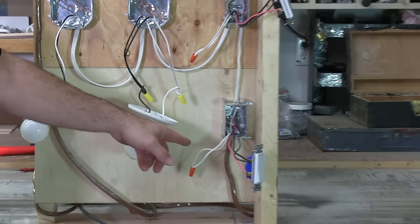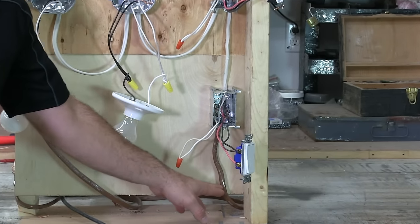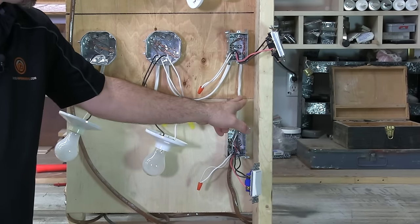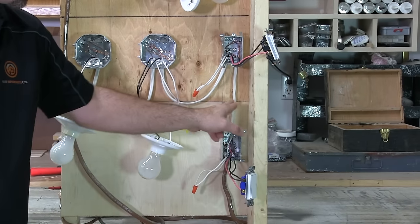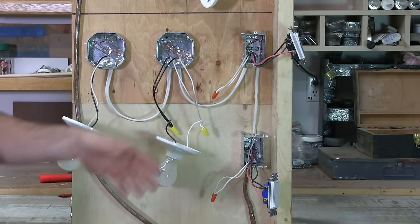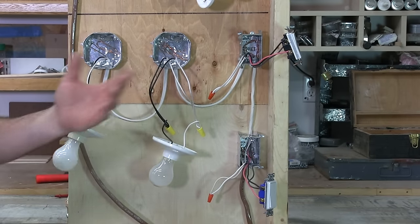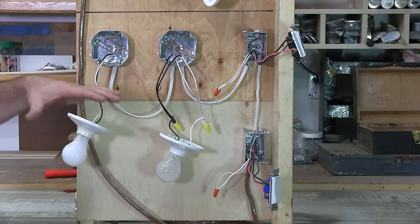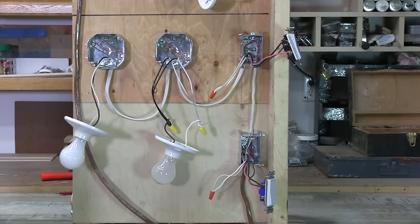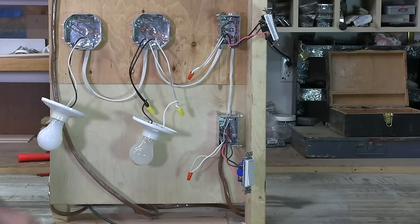In this first one, we've got power coming in through a 14-2. I'm just going to put a disclaimer out right now. In this scenario, I'm not saying that how I've got the actual wire ran from box to box is correct. I don't have staples, anything like that. This video is more about how to hook up the switches to the lights so that everything functions properly and safely.